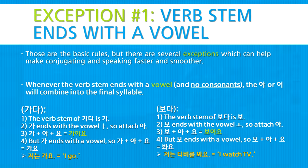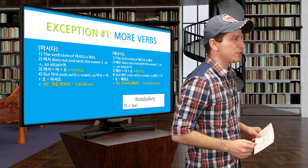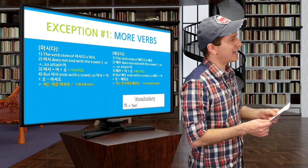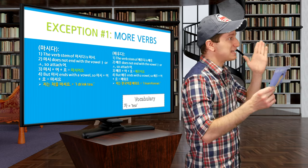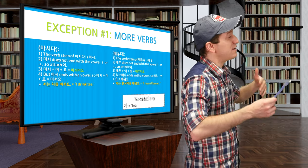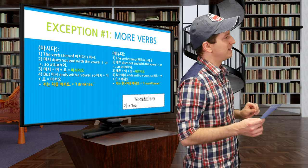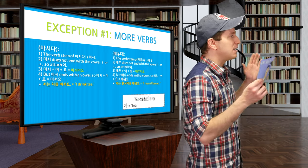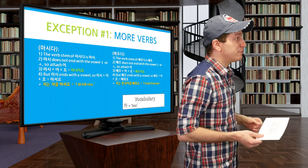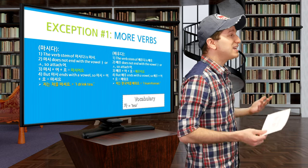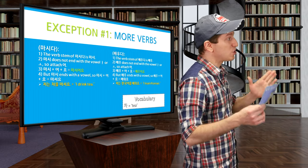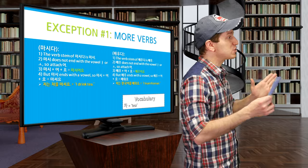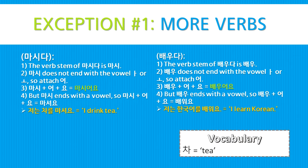This rule is quite common. For 마시다 (to drink), the verb stem is 마시, which ends with a vowel and no consonants at the bottom. 시 is not 아 or 오, so we attach 어: 마시 + 어. Since it ends in a vowel, we combine 시 and 어 to get 마셔, then add 요: 마셔요. Sentence: 저는 차를 마셔요 — I drink tea.